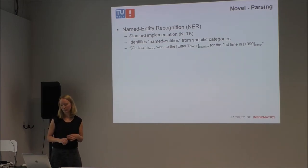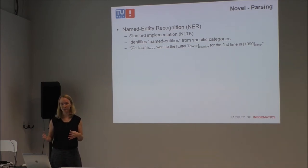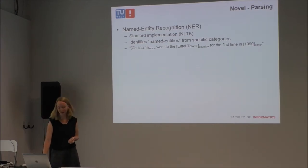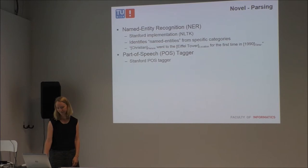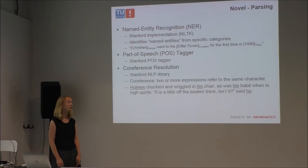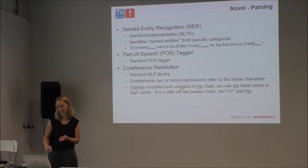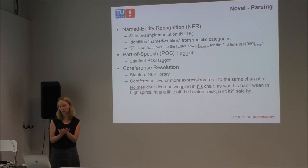The Jane Austen novels and the Dickens novel pass the Bechdel test, while the Sherlock Holmes stories do not. We ran three preprocessing steps over all texts: a named entity recognizer to find people — because for screenplays we already knew the characters from the C lines, but for novels we don't. We also ran a part-of-speech tagger and then a co-reference resolution step. Co-reference is when two or more expressions refer to the same character — for example, 'Holmes chuckled and reclined in his chair,' where 'his' refers to Holmes. This also helps determine who speaks when, for example 'it said he.'